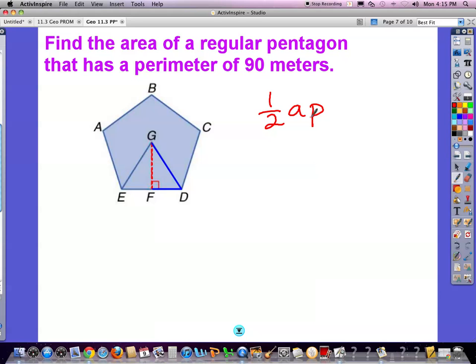A couple things I need to find: I need to find the apothem, I need to find the perimeter. Oh, I have a perimeter. So actually, all I need to find on this whole thing is the apothem. I need to find this height of this triangle, the red dotted line. Let's think - where can we go with this?